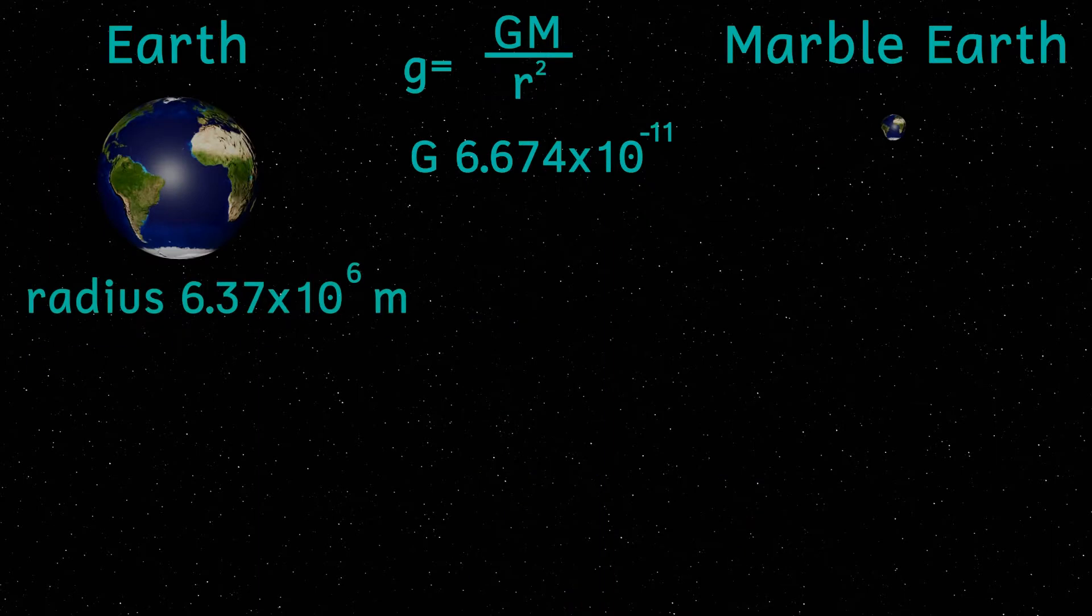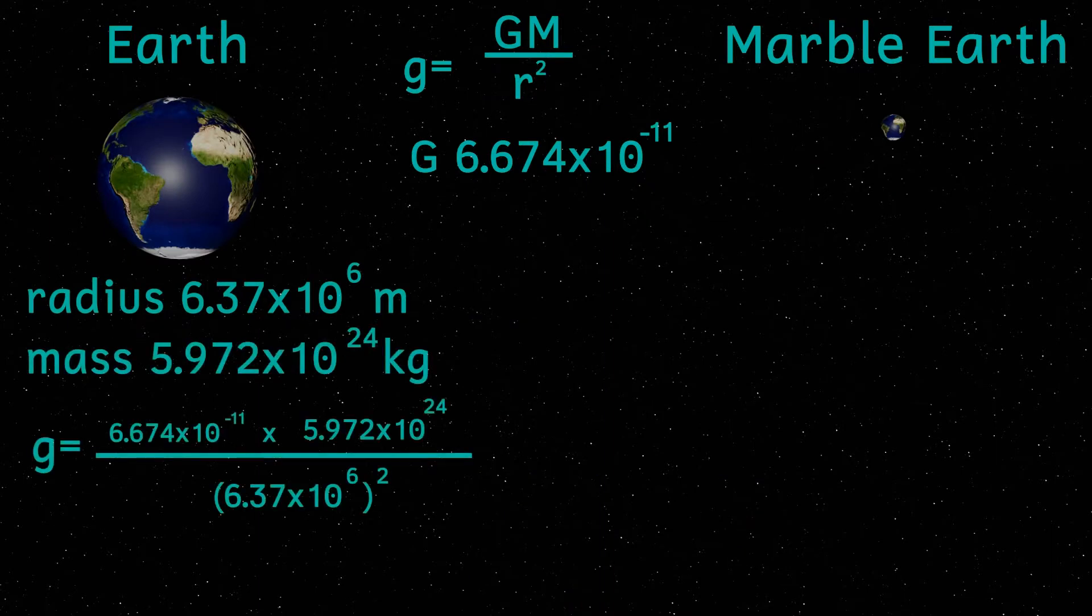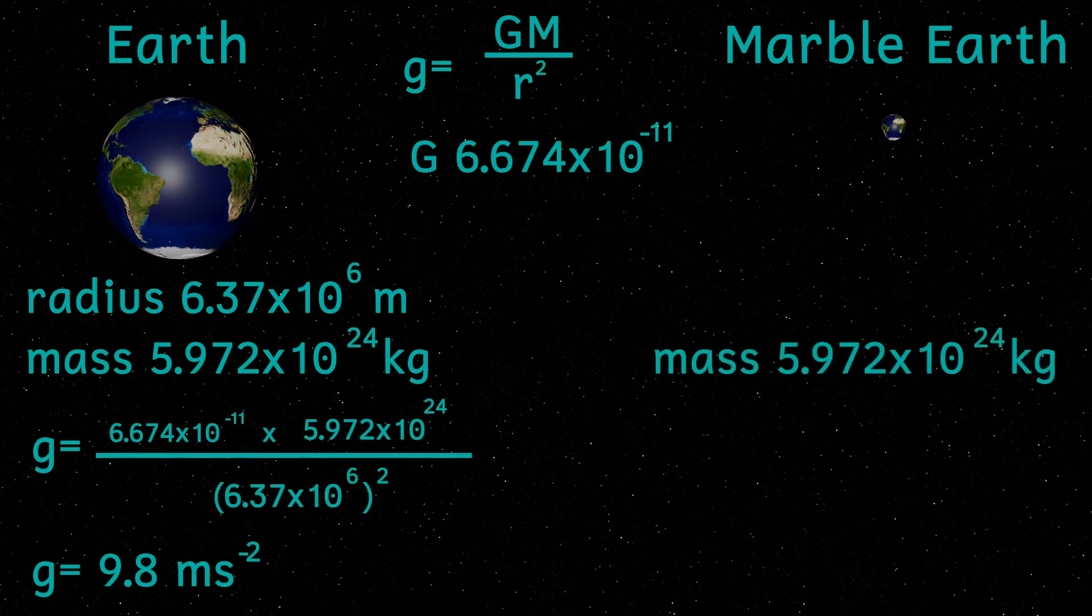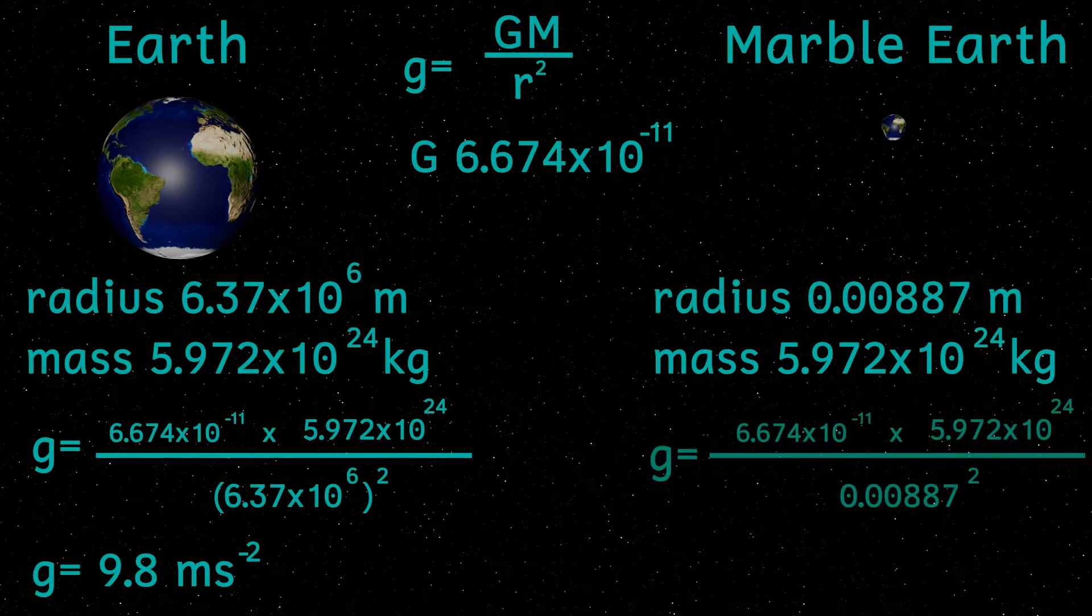This is why if I was able to squeeze the earth down to the size of a marble, it would become a black hole. Even though the mass of the earth wouldn't change, because I was decreasing its size the density would be incredibly high, and as a result the gravity would be astoundingly big.